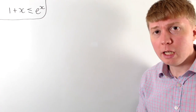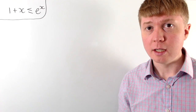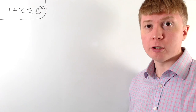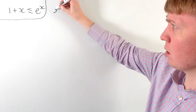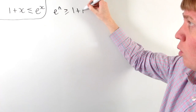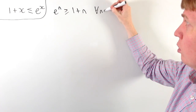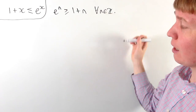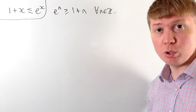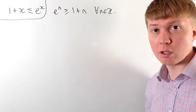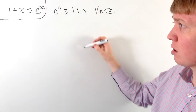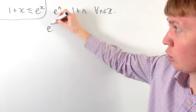For our second proof we'll again explore proof by induction. We could try to show for integer values of n that e to the n is greater than or equal to 1 plus n, and then attempt to generalise to hold for real values x, which we could do using the floor function.